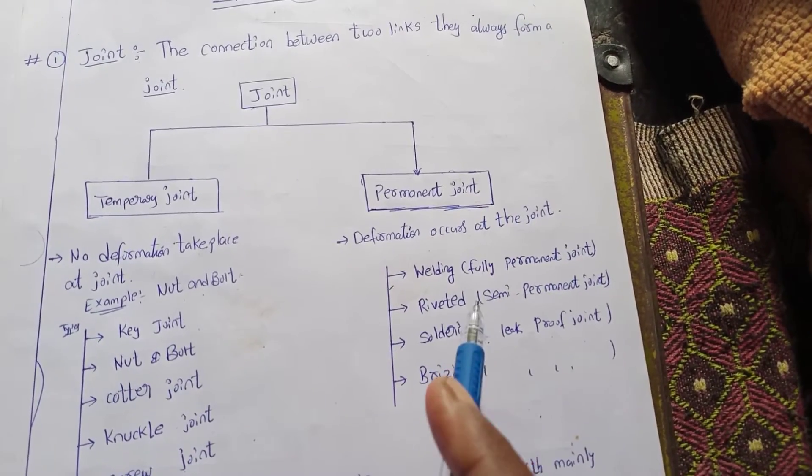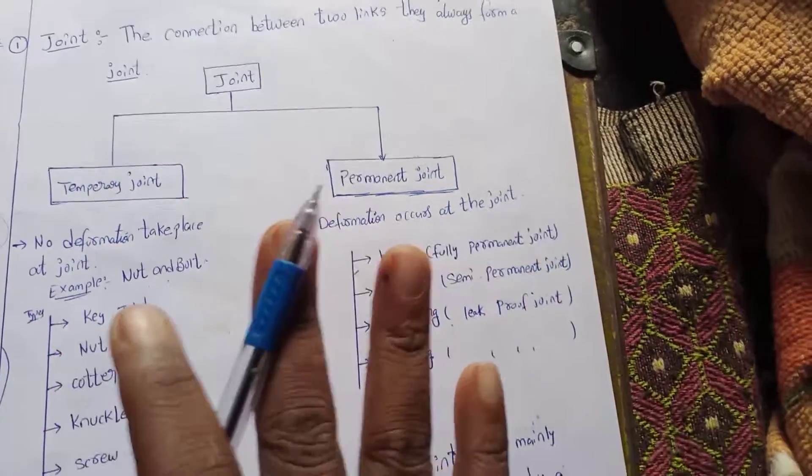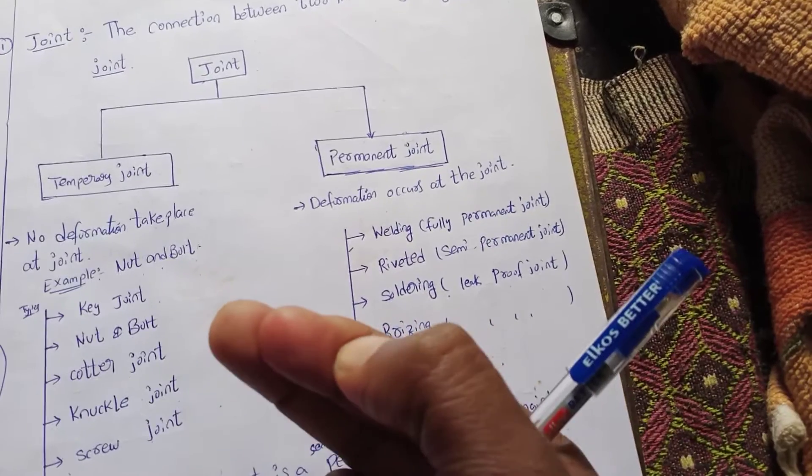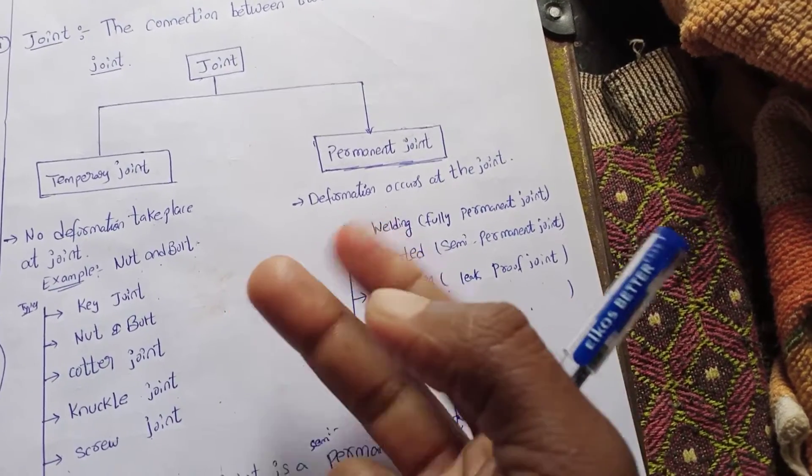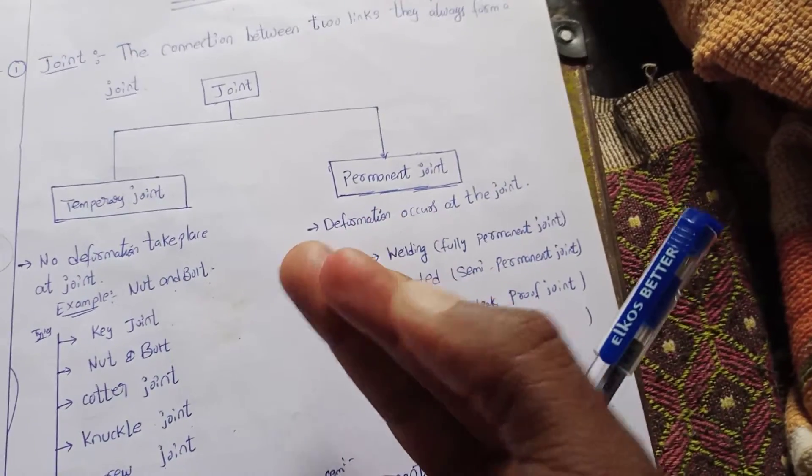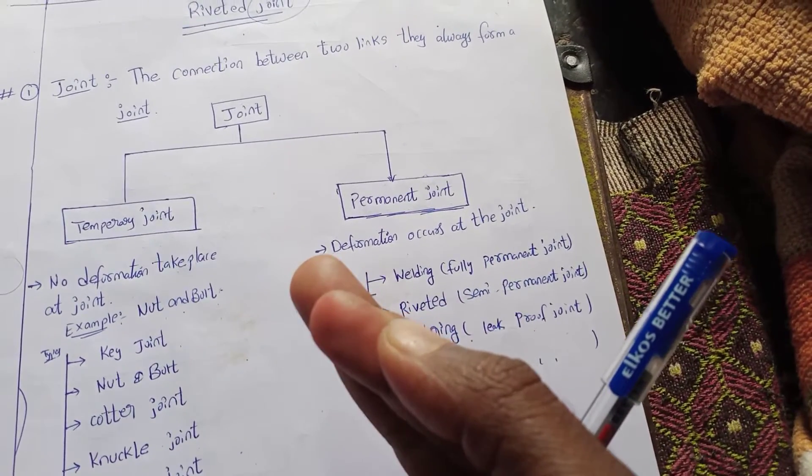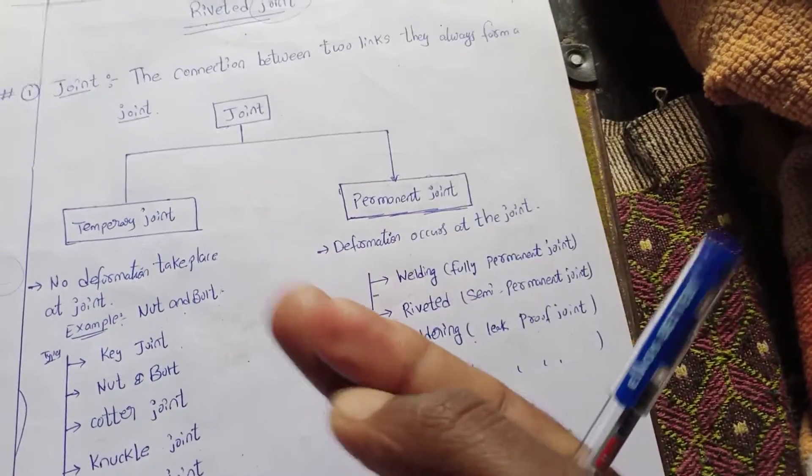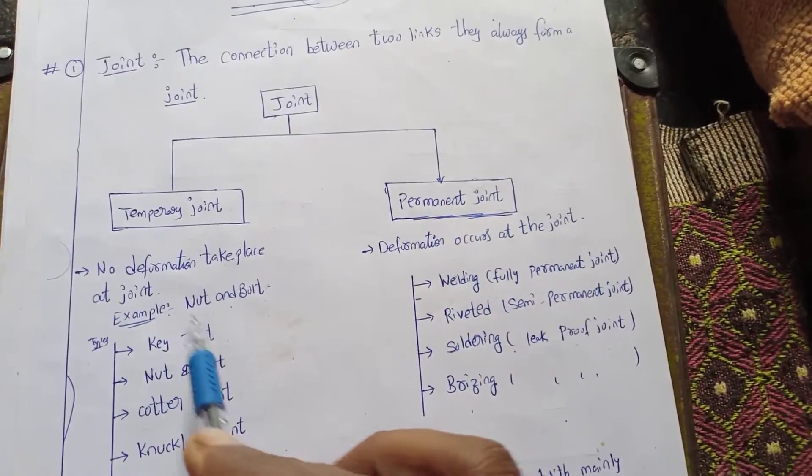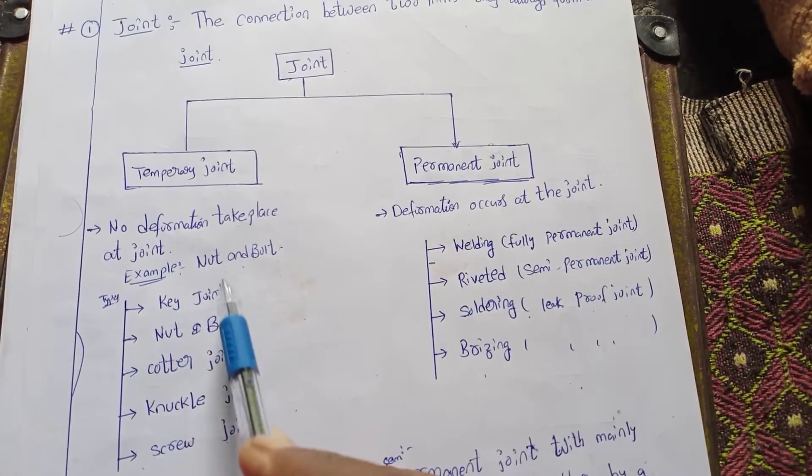Temporary joint and permanent joint. For example, if you put two plates and put a nut and bolt, this is a temporary joint.